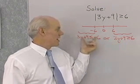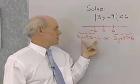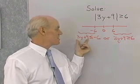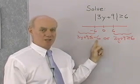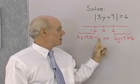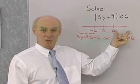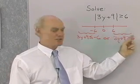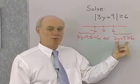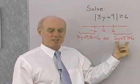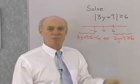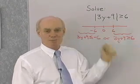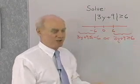3y plus 9 could be in the lower region, where its distance from 0 is more than 6 units, giving us 3y plus 9 less than or equal to negative 6. Or 3y plus 9 could be in the upper region, where its distance from 0 is still more than 6 units, giving us 3y plus 9 greater than or equal to 6. Now I'll simply solve these two inequalities to get my solution set.